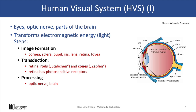The second step is transduction. The retina contains specialized cells called rods and cones, and these cells detect light and convert it into electrical signals. The rods are more sensitive to low light, while the cones are responsible for color vision.